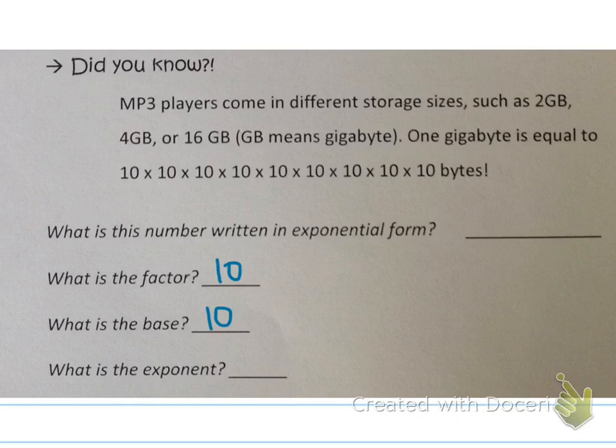And then the exponent is the number that tells us how many times that factor is being multiplied. So we need to go up here and count how many times 10 is being multiplied by itself. So 1, 2, 3, 4, 5, 6, 7, 8, 9 times. That means 9 is the exponent.